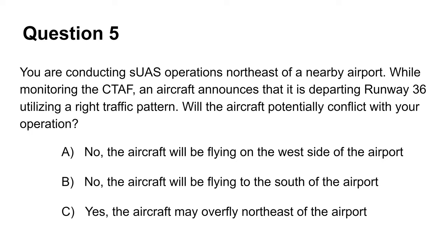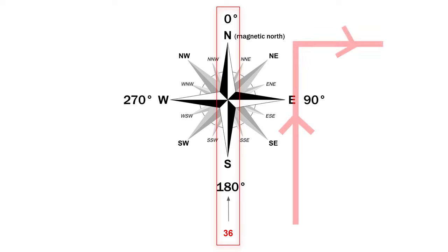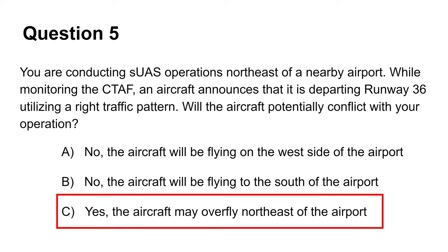The fifth question asks whether operating a drone northeast of a nearby airport would conflict with a manned aircraft departing runway 36 utilizing a right traffic pattern. Runway 36 means the aircraft will be departing from south to north, with the runway facing 360 degrees — precisely at magnetic north. We are told by the common traffic advisory frequency that the aircraft will use the right traffic pattern as opposed to the standard left traffic pattern. This means the aircraft will turn right towards the northeast on the crosswind leg. Since the drone is operated at northeast, the answer is C, as the aircraft will overfly the area where you are operating your drone.